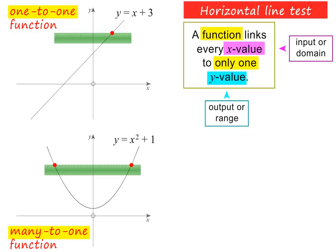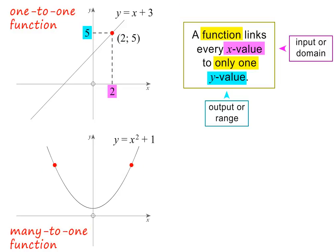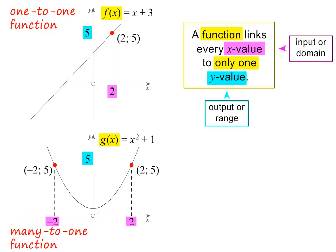Here the ruler clearly cuts the graph at two places. In a one-to-one function, each x value is linked to only one y value. But in a many-to-one function, we have more than one x value linked to the same y value — in other words, many x values linked to the same y value. Also note, in mathematics we usually give a function a name, for example f of x, or g of x, or just f and g.